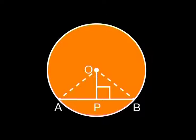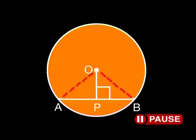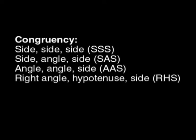We have some theorems about triangles that should help us, so it makes sense to construct triangles by joining OA and OB. Have a good look at the diagram. Is there some way to prove that AP equals PB — that P is the point that bisects AB? If we can prove that the two triangles are congruent, then it will follow that the remaining corresponding parts are equal. For congruency, you need three corresponding things that are equal: pairs of equal sides and/or pairs of equal angles.